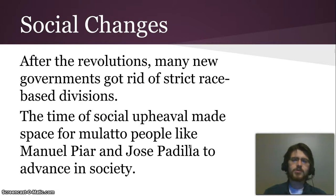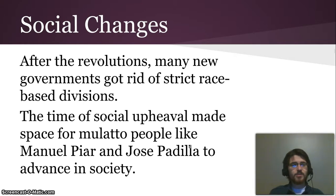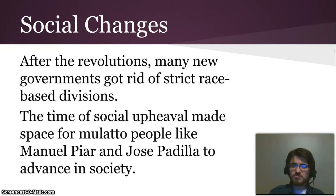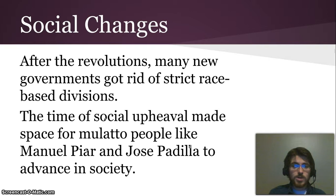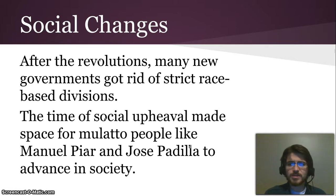There were also social changes. After the revolution, these new governments got rid of all those strict race-based divisions — kind of, sort of, and not everywhere — but a lot were reduced, and if they were still in place, it wasn't by law but by custom, people continuing to do it in their society. This time of social upheaval also gave the opportunity for Manuel Piar and Jose Padilla to advance in society, because they were people of mixed race — mulatto, meaning European and African ancestry mixed together — and they would not have been able to advance very far in colonial society whatsoever. This was an excellent opportunity for them and others like them to gain power, influence, and build up some economic base.